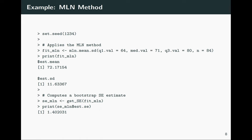A very similar example uses the MLN method instead of QE. The code is essentially identical, replacing QE with MLN throughout. Applying the MLN method gives estimates of a mean of 72 years, a standard deviation of around 11.6, and applying the parametric bootstrap standard error estimator gives a standard error of around 1.4.